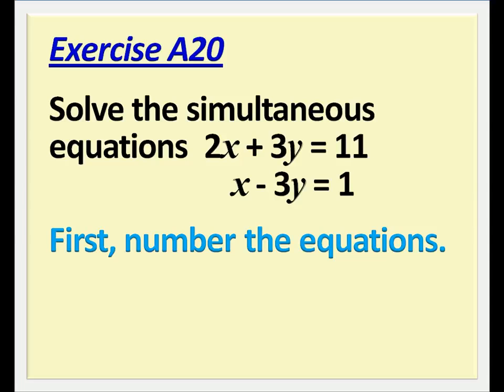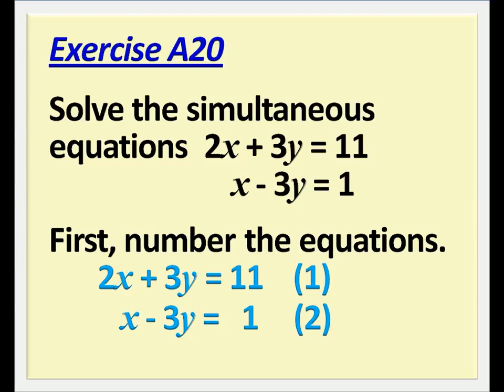First, number the equations. 2x plus 3y equals 11 as equation 1, and x minus 3y equals 1 as equation 2.